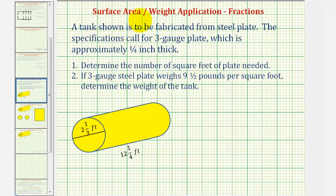Welcome to an application of surface area that requires the use of fractions. A tank shown is to be fabricated from steel plate. The specifications call for a three-gauge plate, which is approximately one-fourth of an inch thick. Number one, we want to determine the number of square feet of plate needed to construct the tank, which would be the surface area of the tank. And then number two, if three-gauge steel plate weighs nine and a half pounds per square foot, we want to determine the weight of the tank.